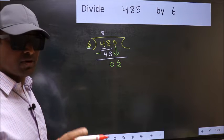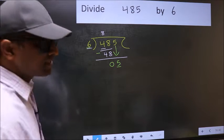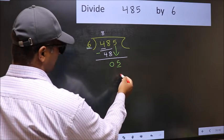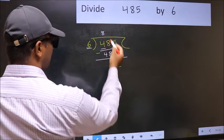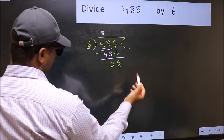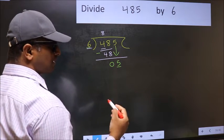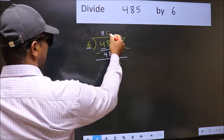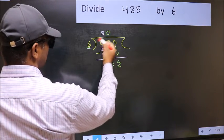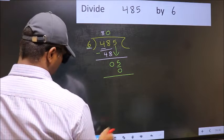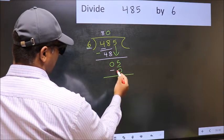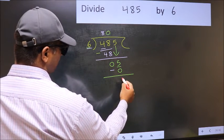Instead, what you should think of doing is: what number should we write here? If I take 1, we will get 6. But 6 is larger than 5. So what we should do is take 0. So 6 into 0 is 0. Now you should subtract. 5 minus 0 is 5.